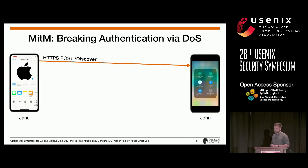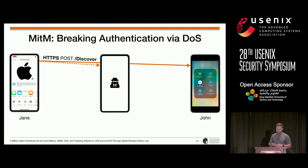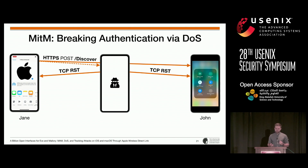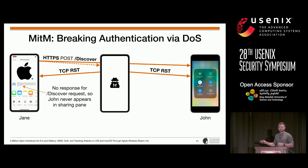Let's get back to the authentication. Jane sends a discover request to John, but this time an attacker is also within communication range. The goal of the attacker is to prevent the handshake from ever completing successfully. Therefore, we mount a denial-of-service attack to prevent direct communication between the two targets — specifically, a TCP reset attack to terminate the underlying TCP connection. We use our own implementation of AWDL to overhear TCP connections between Jane and John and inject our own messages. Because the TCP reset attack prevents John from ever responding to Jane directly, John's icon never appears in the sharing pane, placing the attacker in a man-in-the-middle position.